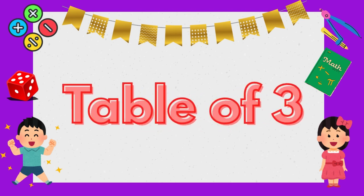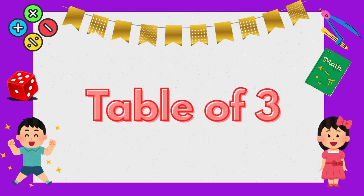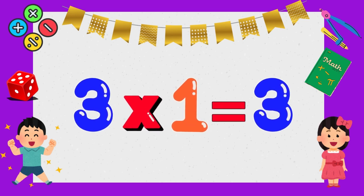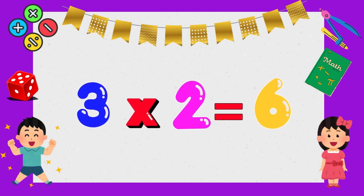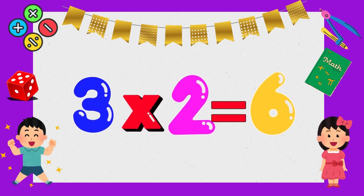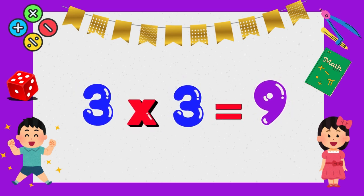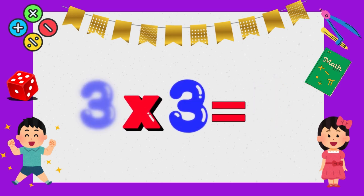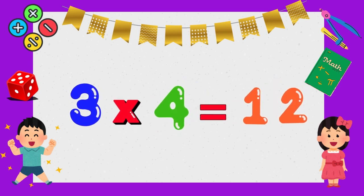Let's learn. Table of three. Three times one is three. Three times two is six. Three times three is nine. Three times four is twelve.